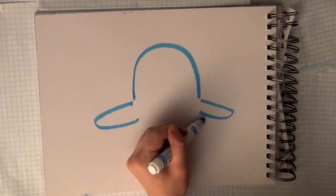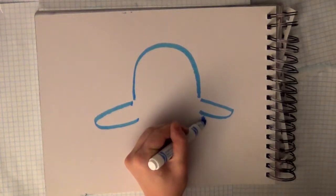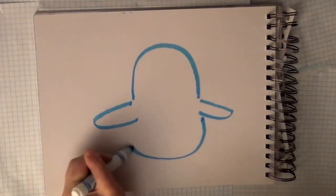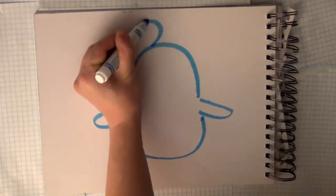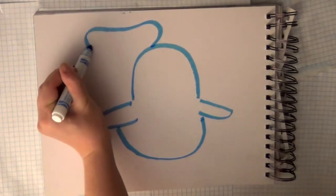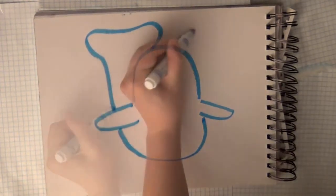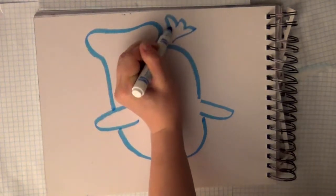The next step is to make a little bit bigger half circle pointing up this time. Now you're going to make his tail. Don't forget to give him a water spout.